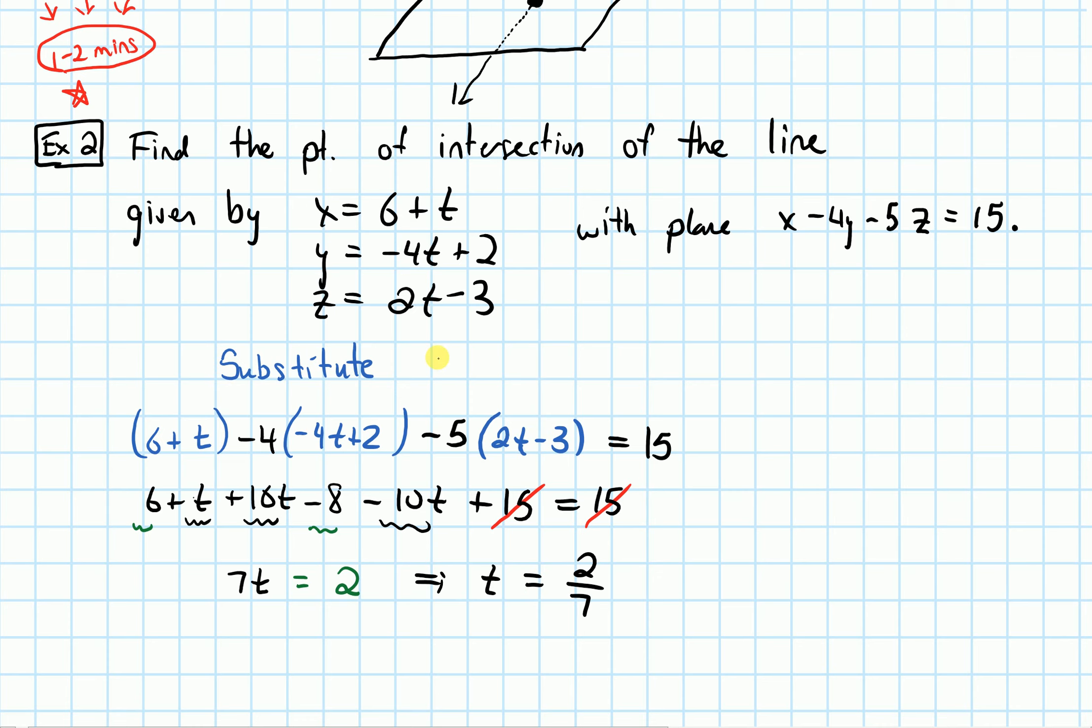The parametric equations sort of describe like a particle moving along the line. So in that context, 2/7 is the time when a particle traveling along the line meets the plane, when it will touch the plane or land on the plane.